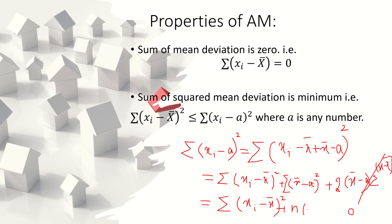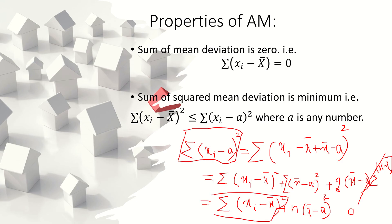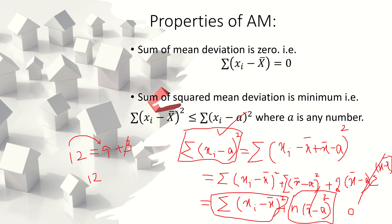So we have summation (xi minus a) squared equals summation (xi minus x-bar) squared plus n times (x-bar minus a) squared. If you remove the second term, this quantity becomes larger — just like 12 equals 9 plus 3, and removing 3 makes 12 greater than 9. Similarly, removing n times (x-bar minus a) squared means summation (xi minus a) squared is greater than summation (xi minus x-bar) squared. This property is important when we later discuss variance and standard deviation.